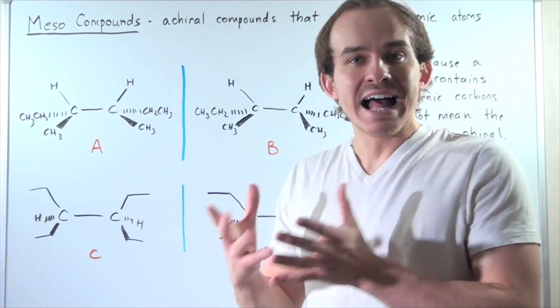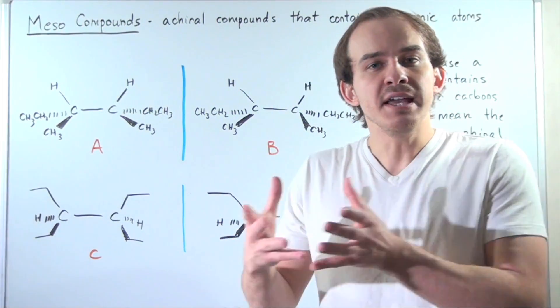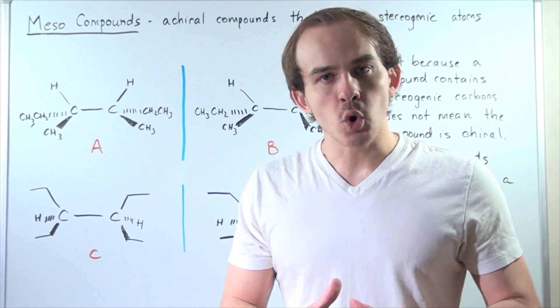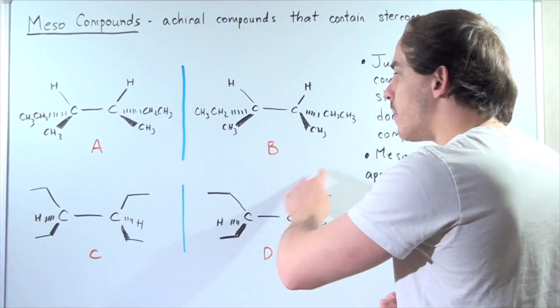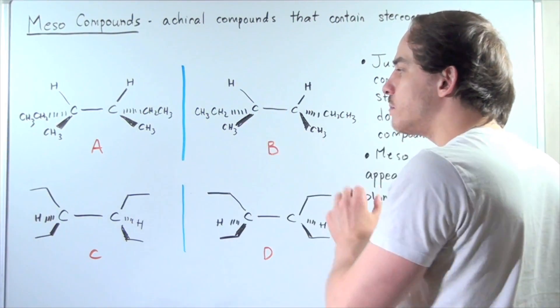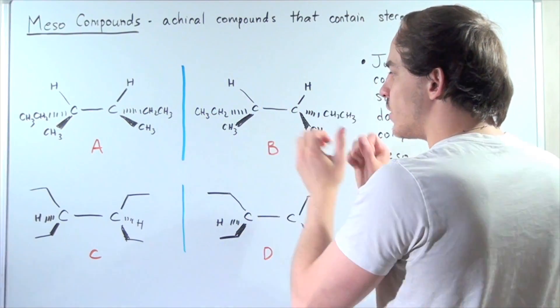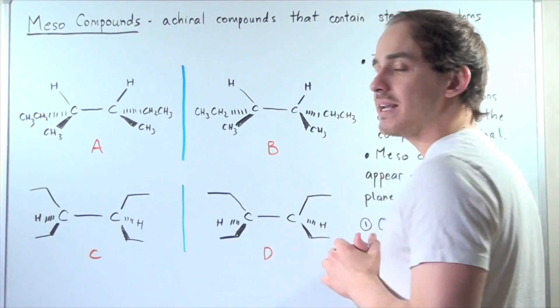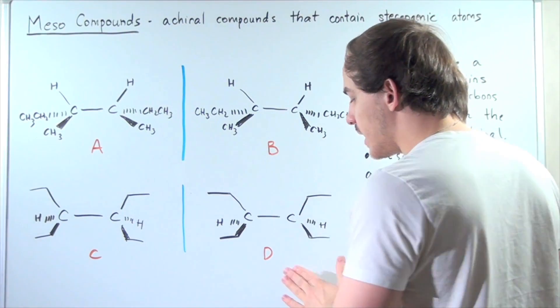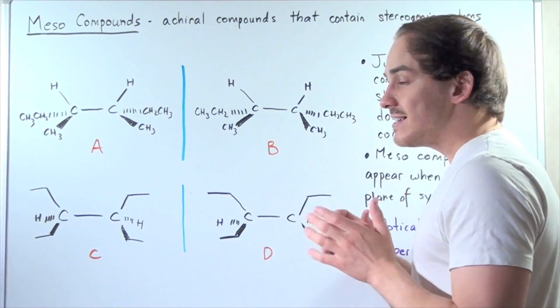Remember, an enantomer is simply a mirror image that's not superimposable. Is this compound superimposable? In other words, can I take this, rotate it in a way, and produce back my compound A? And likewise, for D and C, the answer is yes.